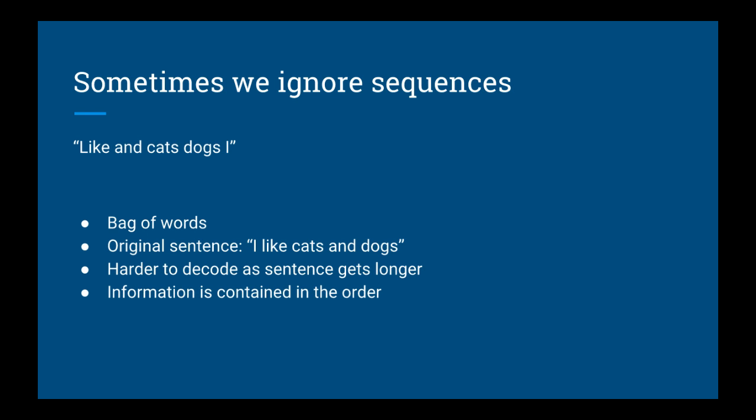Consider the following sentence: like and cats, dog, I. Of course, this sentence doesn't make any sense, and that's what happens when you use a model like bag of words. The fact that it becomes very hard to tell what a sentence means when you take away the time aspect tells you that there's a lot of information carried there. The original sentence was, I like cats and dogs, and you could have probably decoded that yourself, but you can imagine how this would get progressively harder as the sentence gets longer.